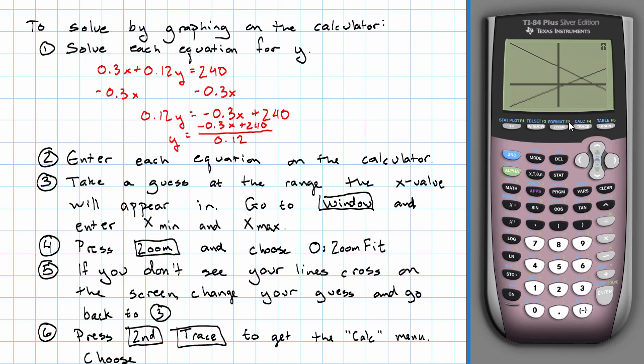We're going to press second and then trace to get what's called the calc menu, and we're going to choose option five, which is intersect. Now, notice what it says.